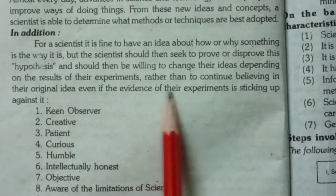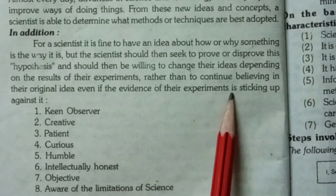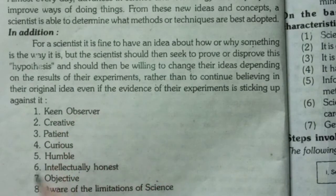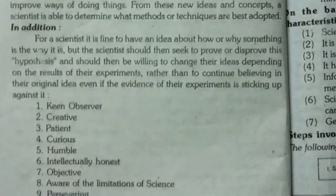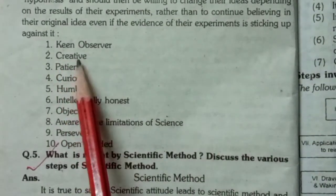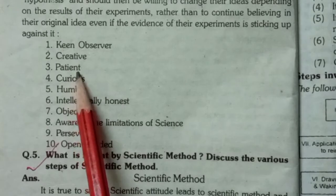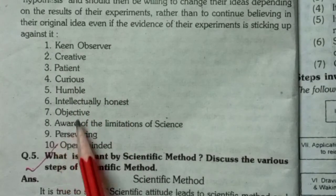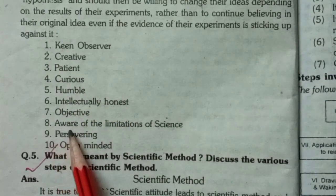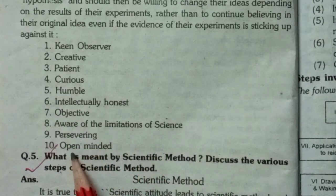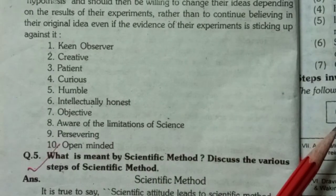even if the evidence of their experiments is stacking up against it. Scientists also need other qualities such as being a keen observer, creative, patient, curious, humble, intellectually honest, objective, aware of the limitations of science, persevering, and open-minded.